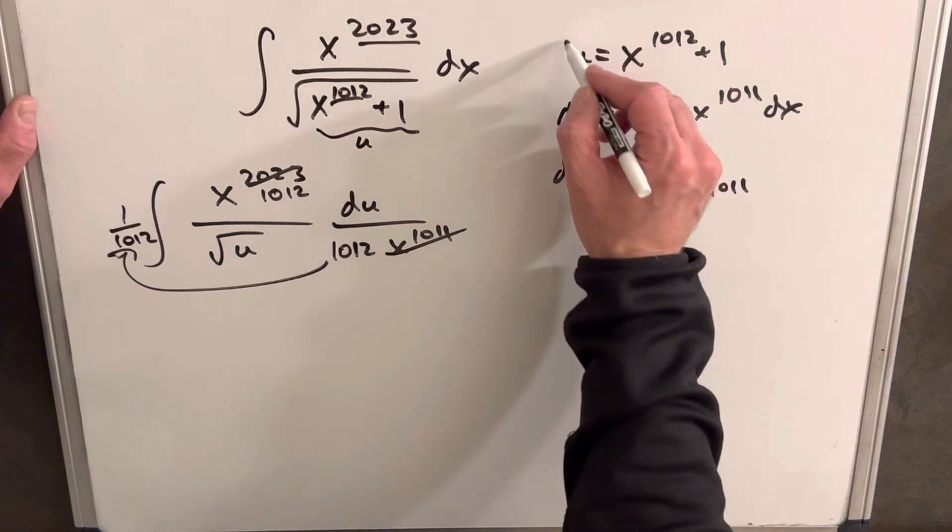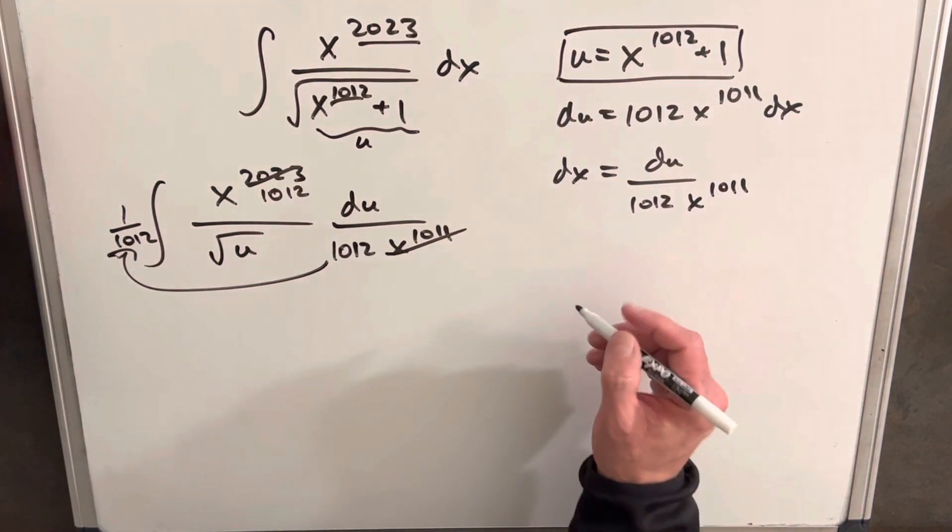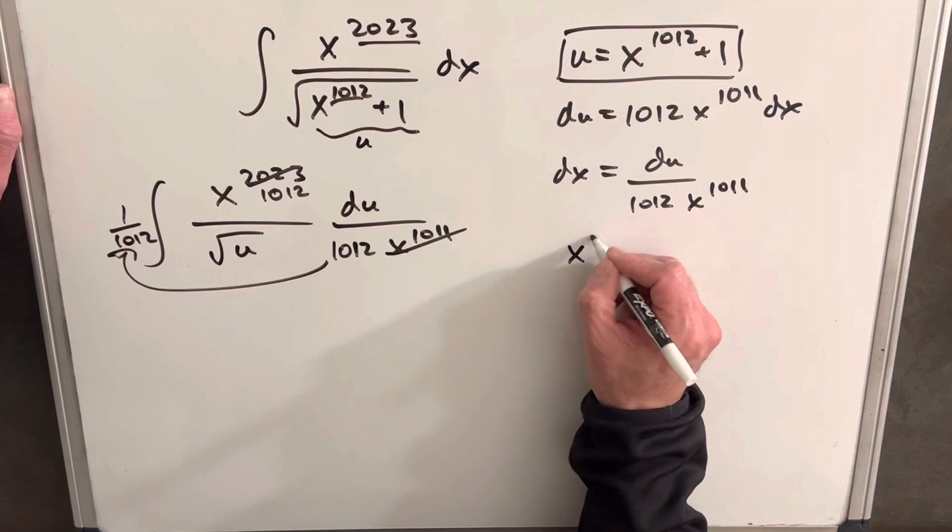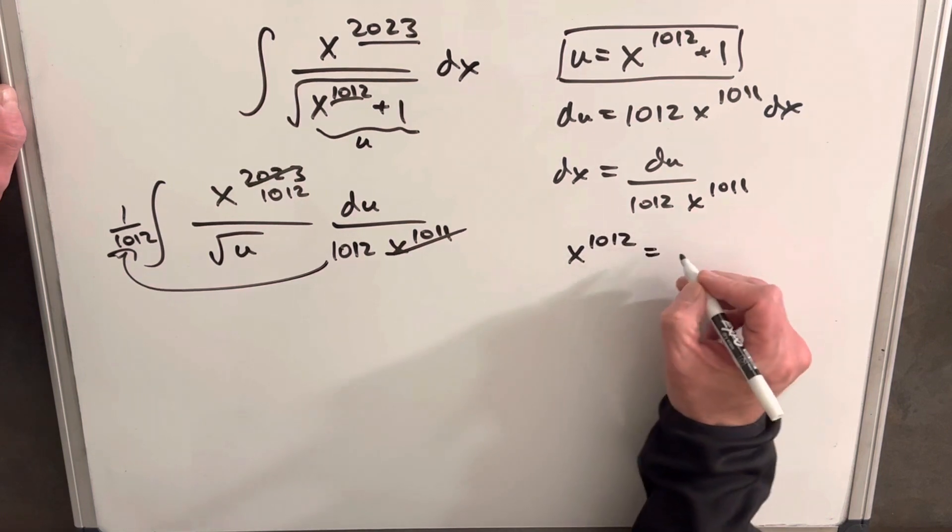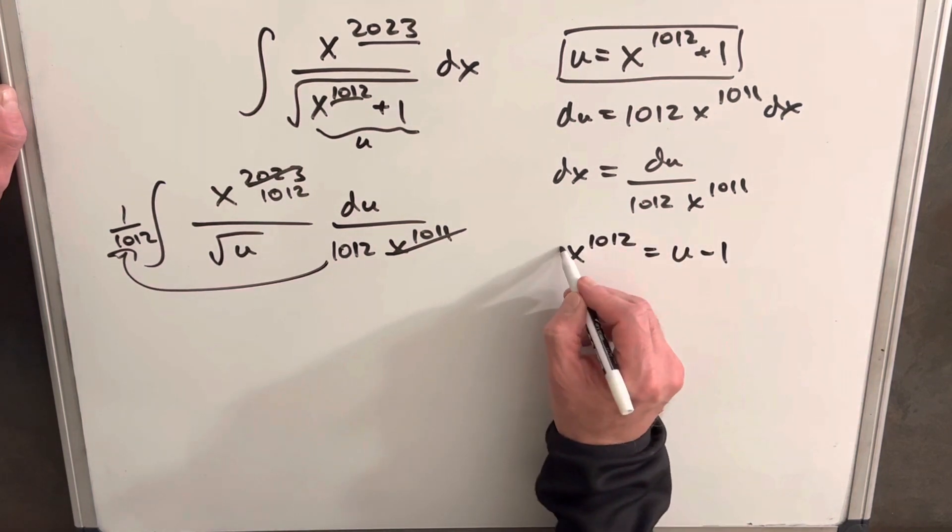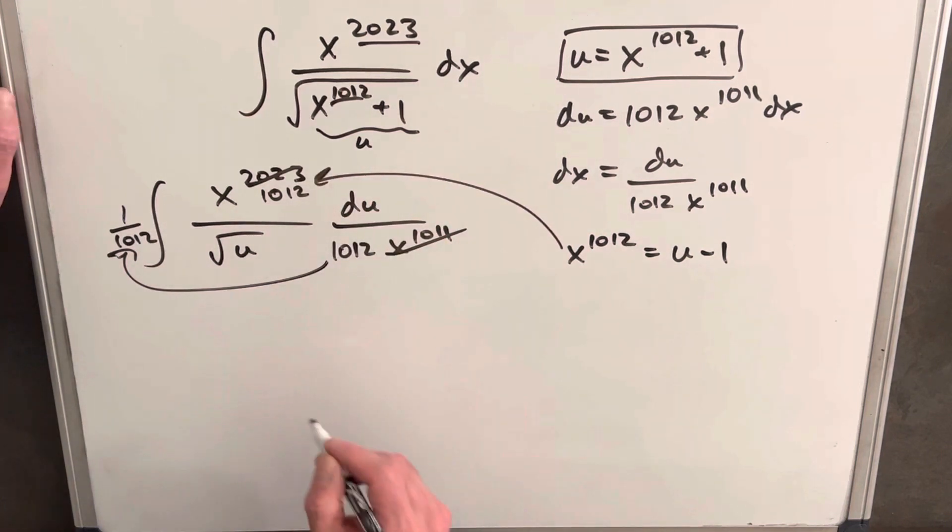And then we can make use of this formula or substitution, and then we'll just solve it for x^1012, and that's going to be u minus 1, and we'll just have that to plug back here. So let's rewrite this.